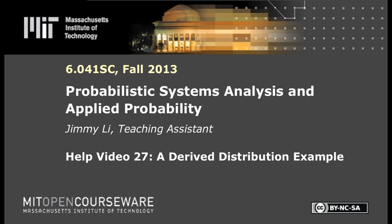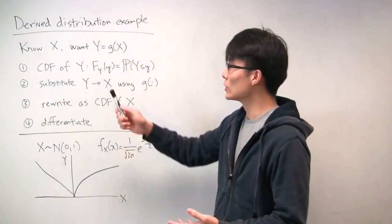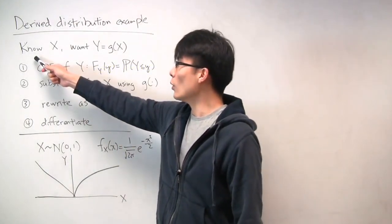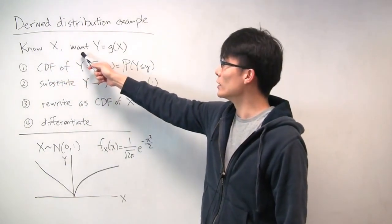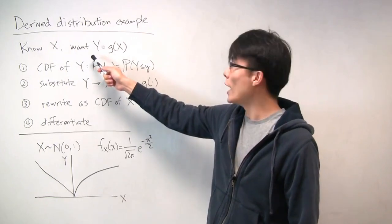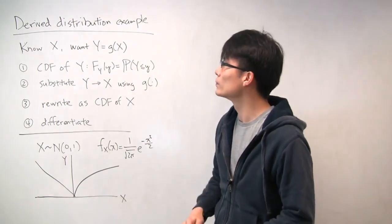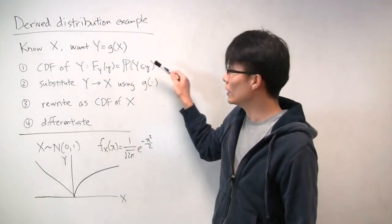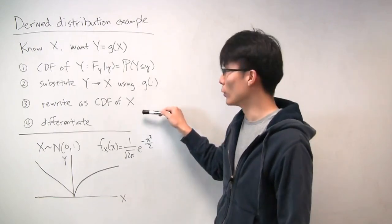Hi. In this problem, we'll work through an example of calculating a distribution for a random variable using the method of derived distributions. In general, the process goes as follows: we know the distribution for some random variable x, and what we want is the distribution for another random variable y, which is related to x through some function g, so y = g(x). We can summarize this using four steps.